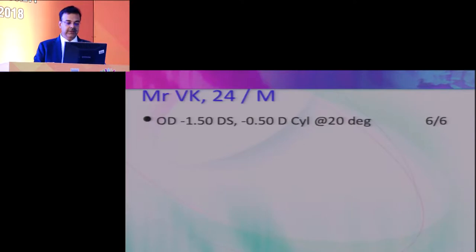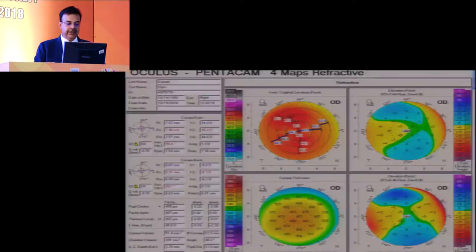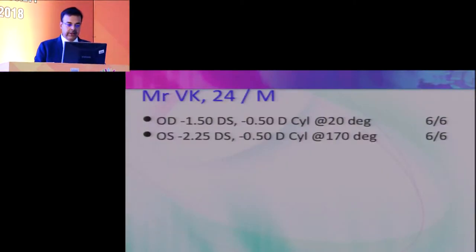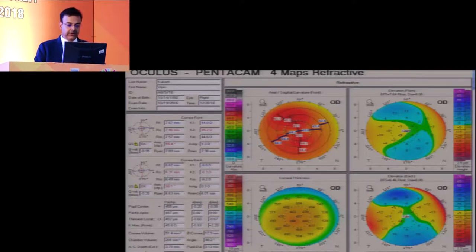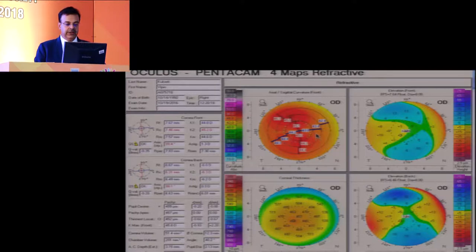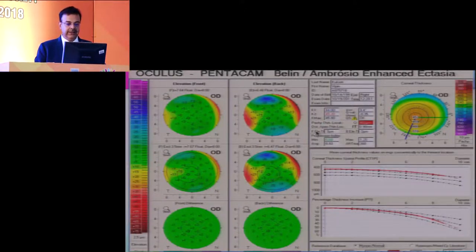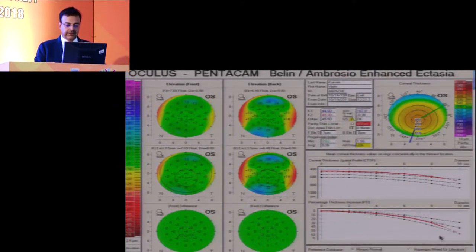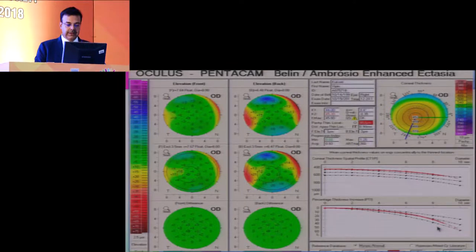This gentleman is a 24-year-old male with a small correction — minus 1.5 with 0.5 cylinder at 20 degrees, and minus 2.25 with 0.5 at 170 degrees — improving to a crisp 6/6 and wanting refractive surgery. The Pentacam maps show a skew in the axis, which is a bit of a flag. The elevation maps and pachymetry are small at about 460. The other eye is 464 with a similar skew. Otherwise straightforward refraction and the patient is keen for surgery. The enhanced ectasia display looks fairly good, except the percentage thickness increase is dipping as in the other eye. We have to decide whether to offer refractive surgery at all.